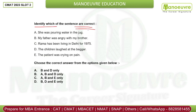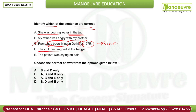Identify which sentences are correct. 'She was pouring water in the jug' — this is correct. 'My father was angry with my brother' — singular verb, singular subject, conjunction and preposition are all right, so this is correct. 'Rama has been living in Delhi for 1975' — 'for' is wrong here; it should be 'since' because 'has been' requires 'since' with a specific year. 'The patient was trying on pain' — this is wrong. So ABD is your answer.